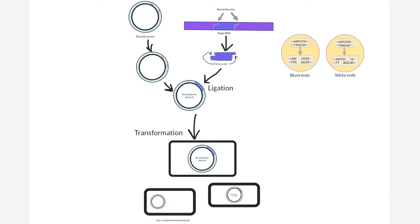Through the next process of transformation, the recombinant DNA molecule is inserted into a bacterial cell, and these transformed cells are then cultured. Since transformation is not always successful, restriction fragment analysis or PCR followed by gel electrophoresis and/or DNA sequence analysis can be used to confirm if cloning was successful.